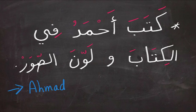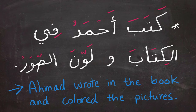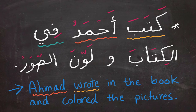The sentence translates to: 'Ahmad wrote in the book and colored the pictures.' Using colors to identify each word: كَتَبَ means 'wrote,' أحمد is the name Ahmad, فِي means 'in,' أَلْ means 'the,' كِتَاب means 'book.'